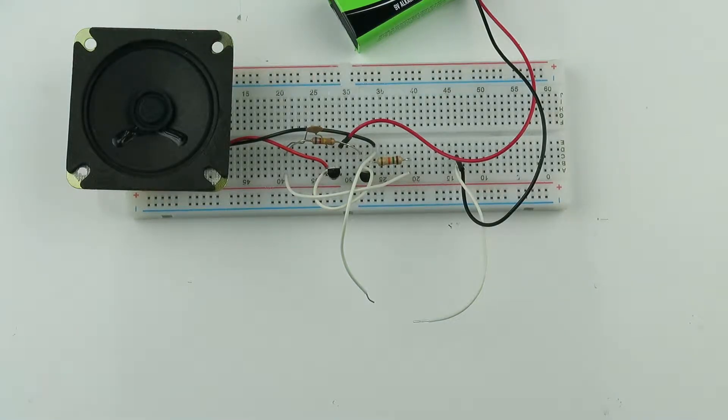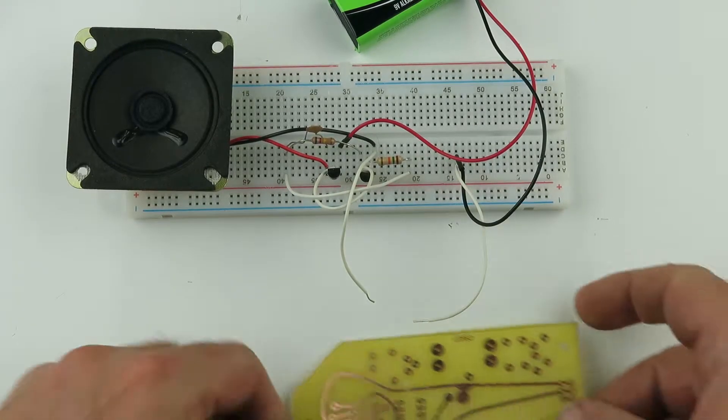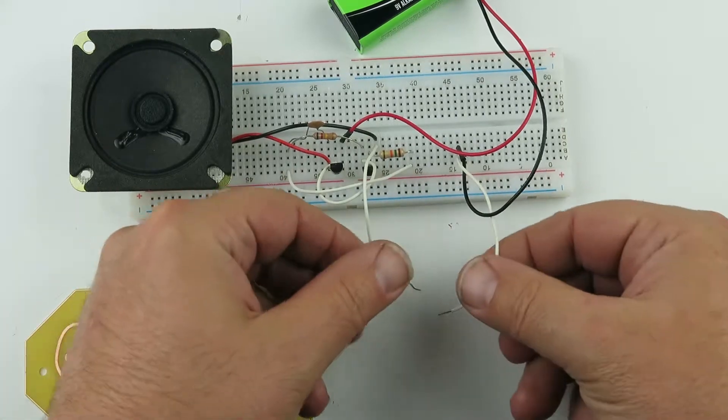That's our continuity tester. I'm going to test out the foil pattern on our board. First of all, make sure that this is working.